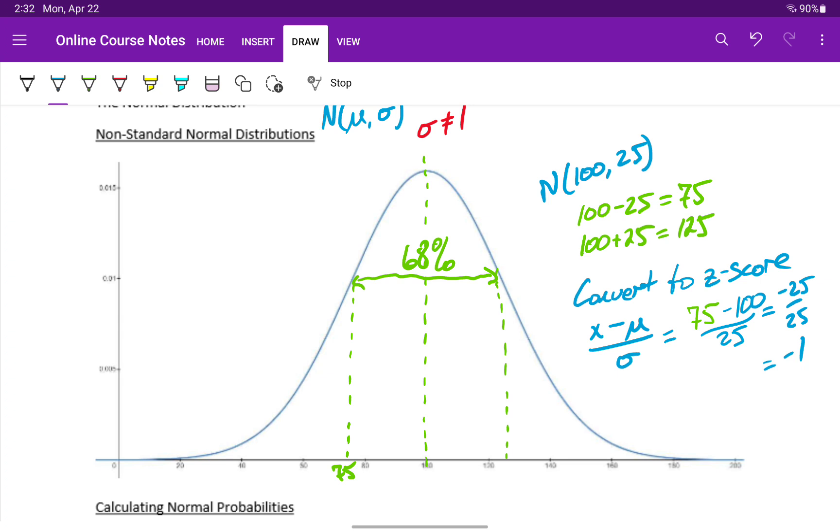Finding a z-score converts all our values into a standard normal distribution, and whatever number we get tells us how many standard deviations away we are from the mean.